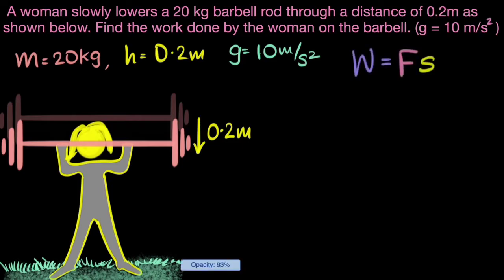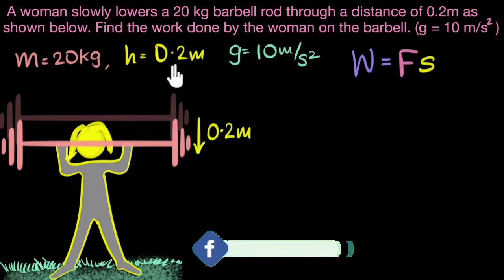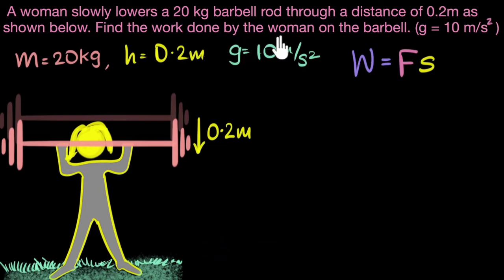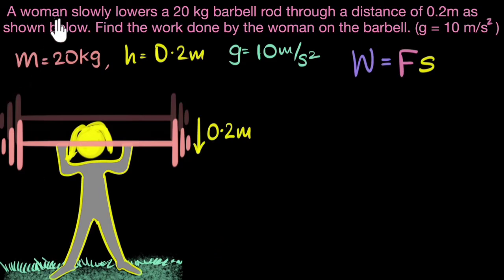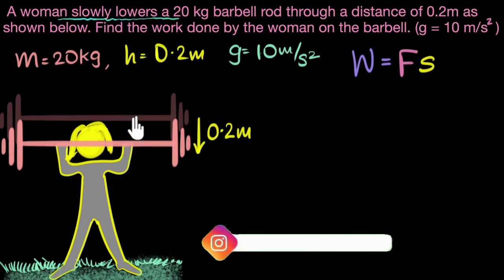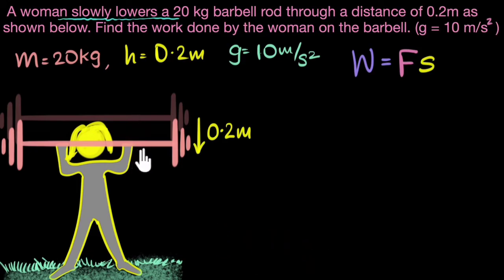Since we need to calculate the work done by the woman on the barbell, it's force times displacement. We know the displacement — that is 0.2 meters. But what's the force? Here we have to calculate the force that the woman is putting on the barbell. The clue is that she is slowly lowering the 20 kilogram barbell — imagine she's lowering it without any acceleration. Can you figure out what that force is and its direction? Pause the video and give it a try.